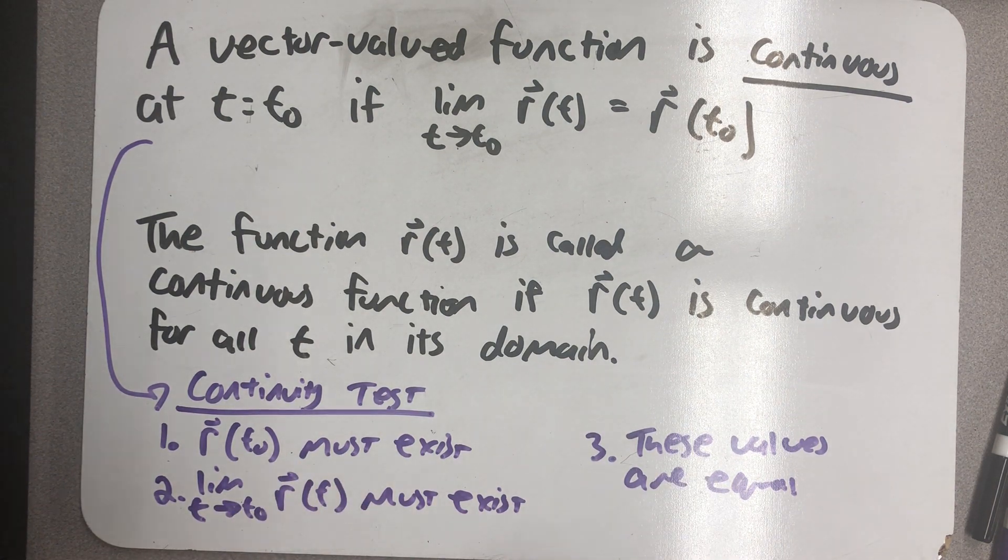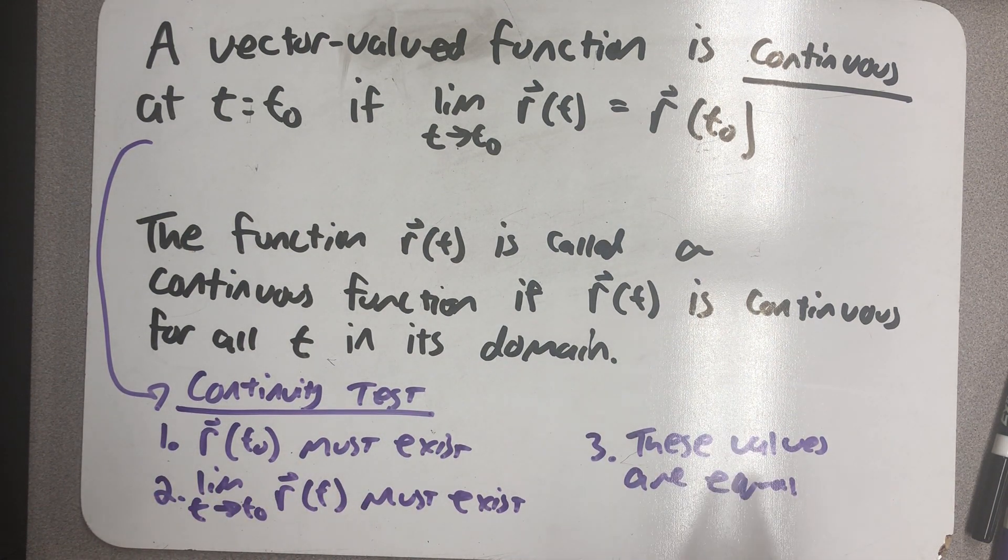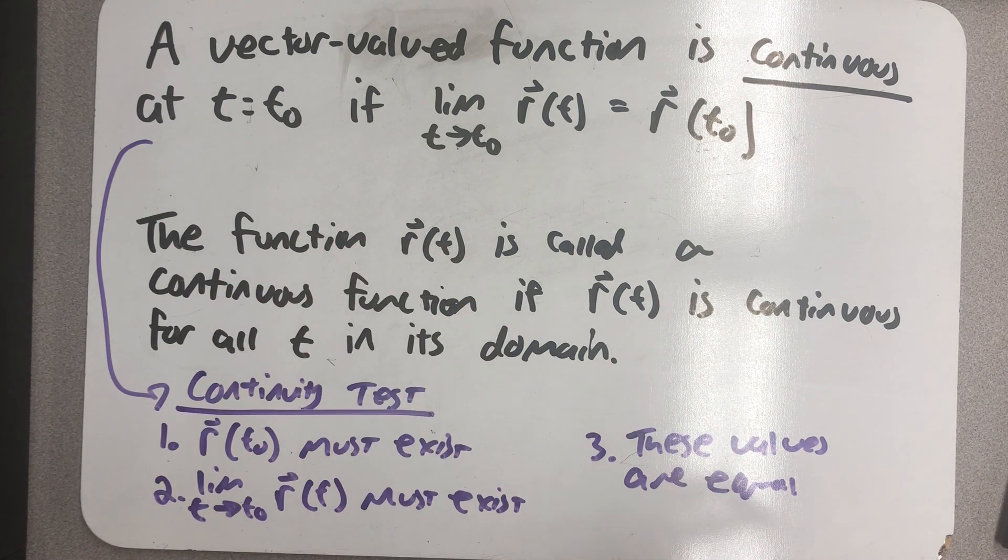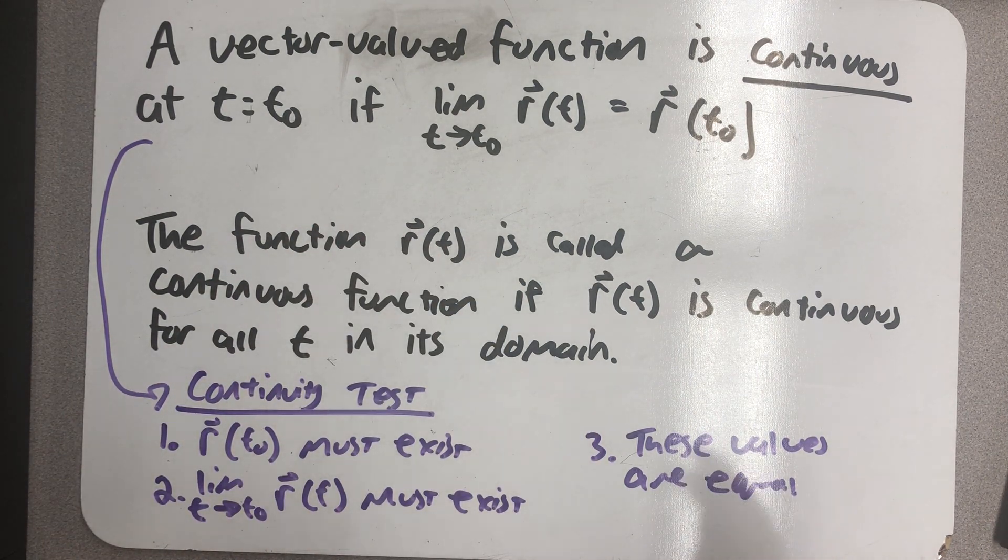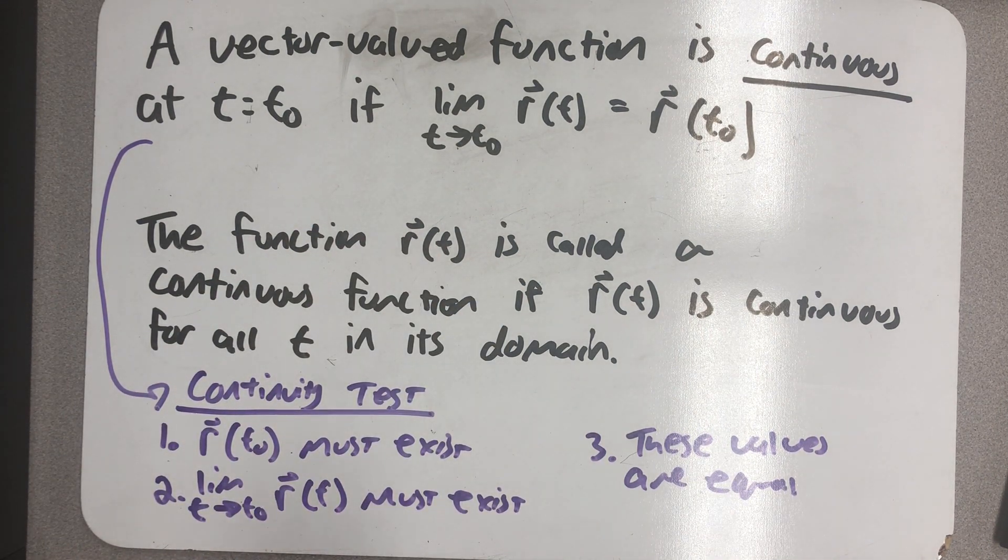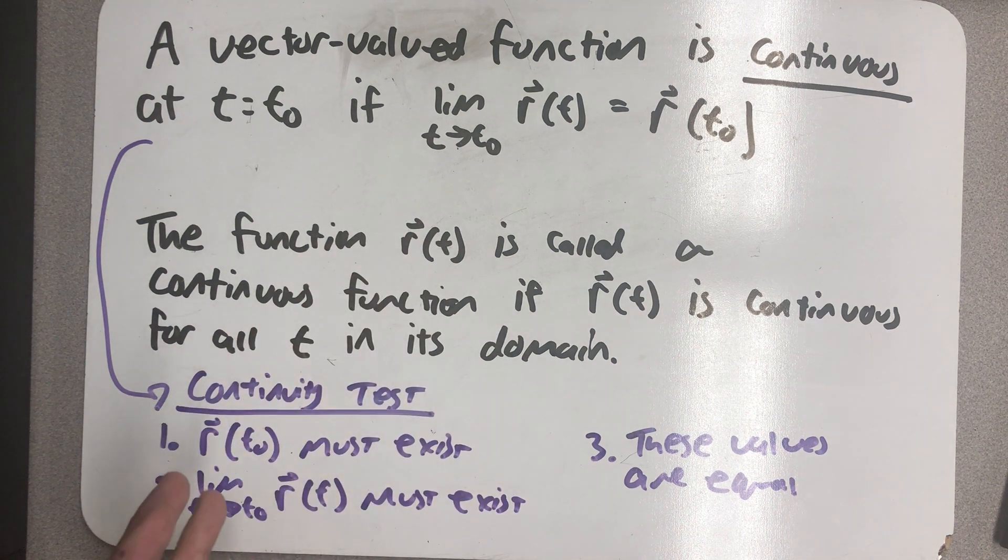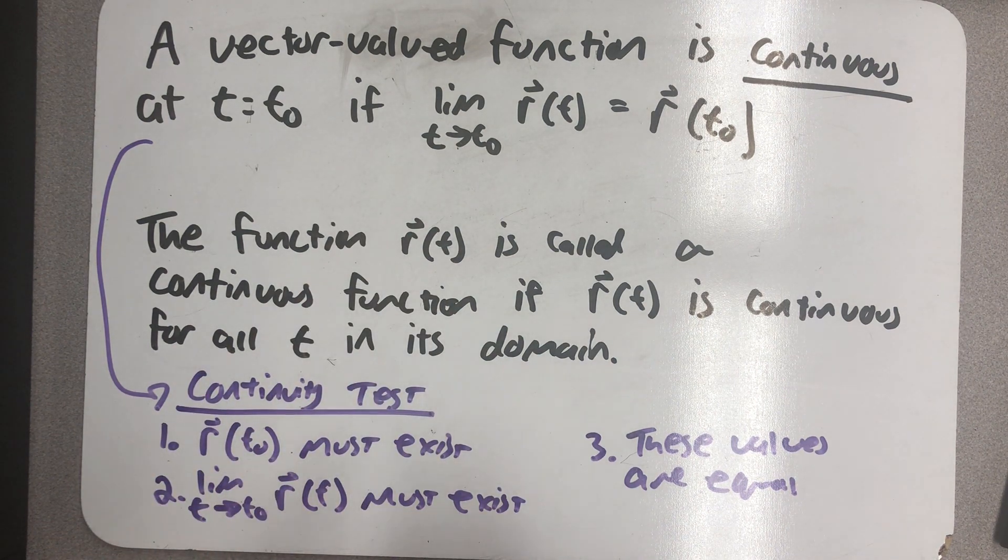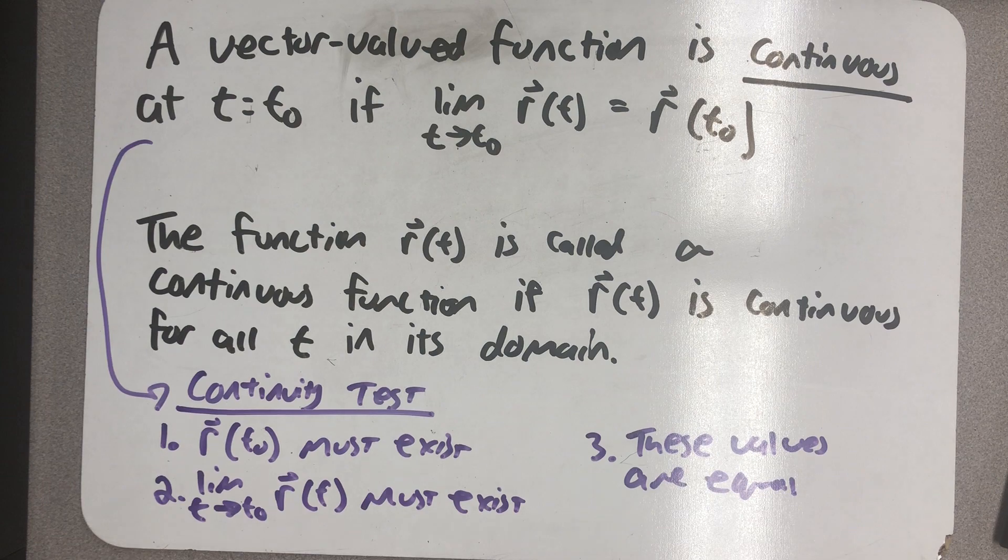So, to test for continuity at a point, we can really look at continuity of all three scalar functions. The function r of t is called a continuous function if r of t is continuous for all of the t in its domain. That's actually the same definition from calc 1 applied to vector functions. Let's look at an example.